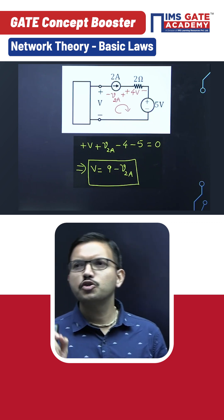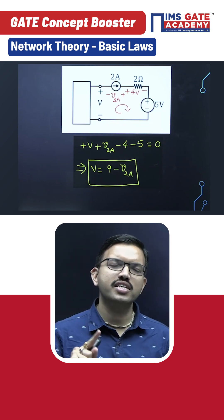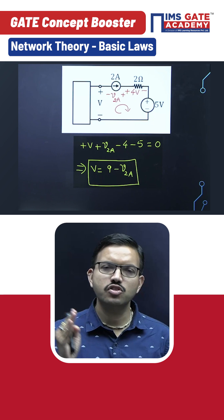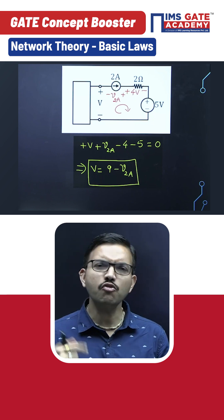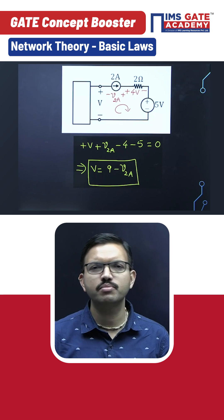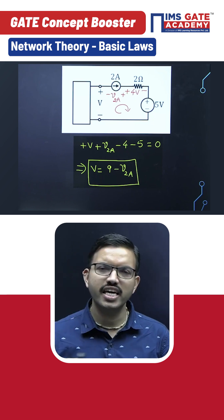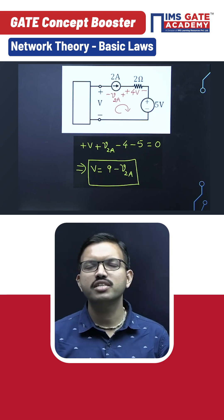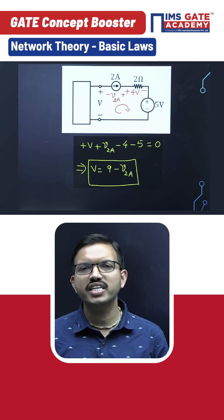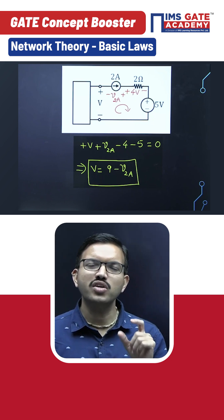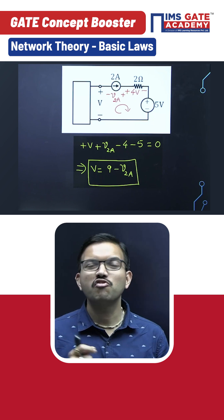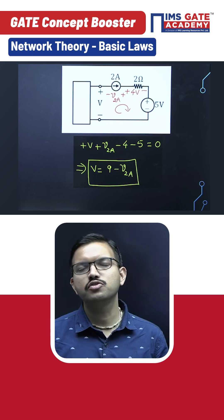Since the two-ampere source is a current source, I've penciled the voltage polarities accordingly—current leaves from positive terminal, so minus-plus polarity. The voltage across two amperes is unknown, so I assumed V_2A. Writing one KVL equation around the closed path and rearranging, you get V = 9 - V_2A. Unless you know the voltage across the two-ampere source, you cannot get the final value V.